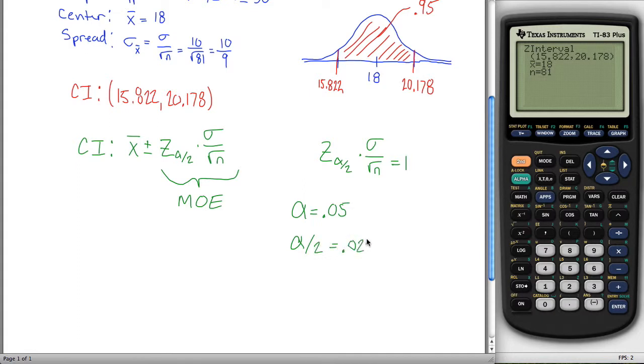And I can find z sub alpha over 2 by using the inverse norm function on my calculator, because the inverse norm function tells you what value has a certain area below it. So if I have .025 above this area, I can tell my calculator that I have .975 below this point. And since I want a z value, my mean will be .025, and my standard deviation will be .1.